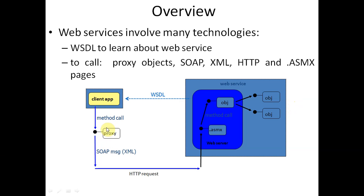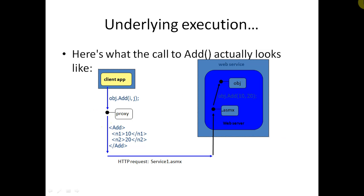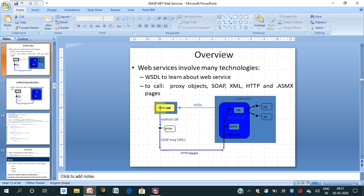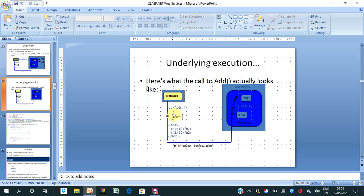The working of web services: the client sends a method call, the proxy server converts it to a SOAP/XML message and sends it to the web server. In the web server we have the .asmx file and the method is called. The result is returned. You can see in the diagram — as the client calls obj.Add, that is the method call.